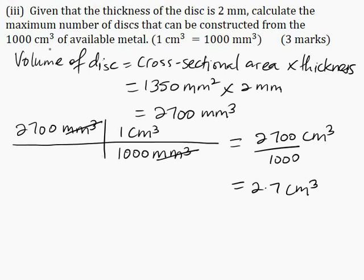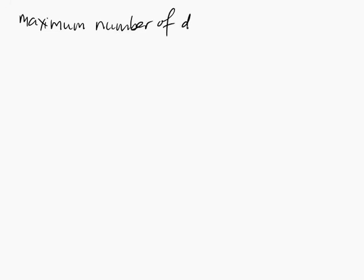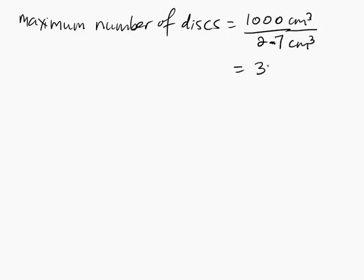Taking the 1000 cm³ of available metal and dividing by 2.7 cm³ gives 370.37. Since you cannot count an incomplete disk, you round down. Therefore, the maximum number of disks that can be constructed from 1000 cm³ is 370 disks.